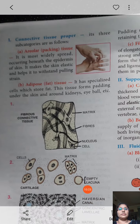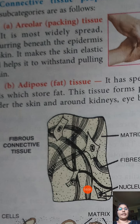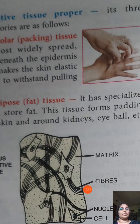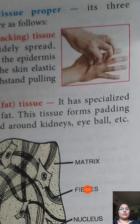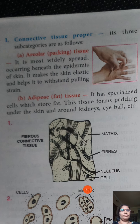Areolar or packing tissue is found beneath the epidermis of the skin. It maintains the elasticity of the skin — when you pull your skin and release, it returns to its previous shape because of this elastic areolar connective tissue beneath the epidermis. It also helps withstand pulling stress.